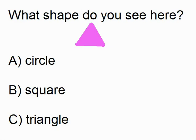What shape do you see here? A circle, B square, C triangle. If you said B rectangle, you are correct.